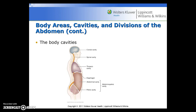Here is a visual diagram of the body cavities, showing the cranial cavity, the spinal cavity, the thoracic cavity, and the diaphragm separating the thoracic cavity from the abdominal cavity. The pelvic cavity is also shown — sometimes referred to as the abdominopelvic cavity.